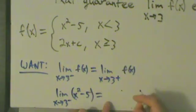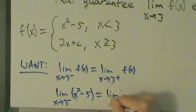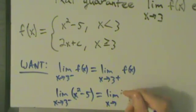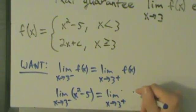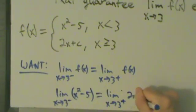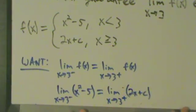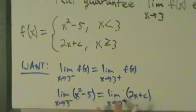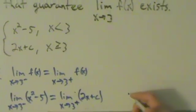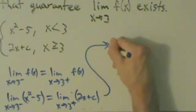So for this side we have the limit as x approaches 3 from the right of 2x plus c. Alright, so pretty much what we have here is an equation that we're going to have to solve for c. So on each side here we can just do direct substitution now. So let's go ahead and do that.